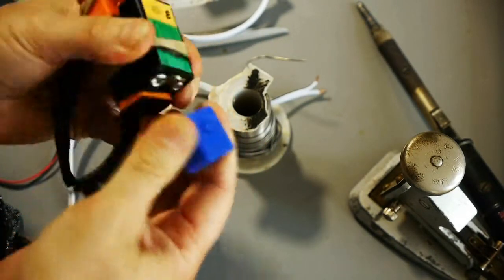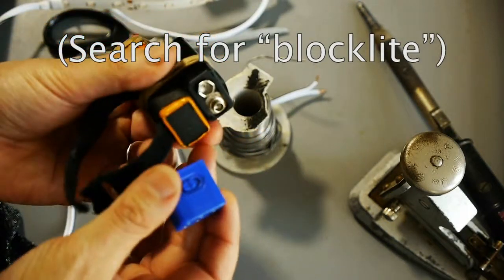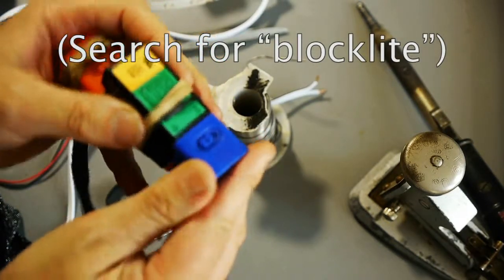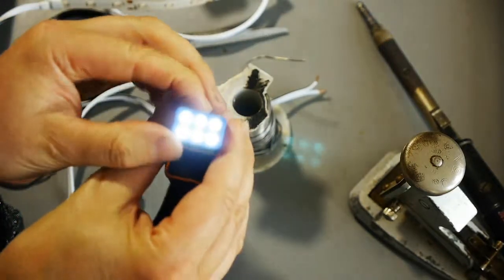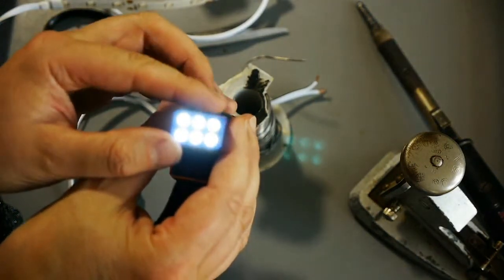These are great little gadgets, you can find them on eBay. They just clip onto a 9 volt PP3 battery and they make a lovely little light with a choice of two lights or six.